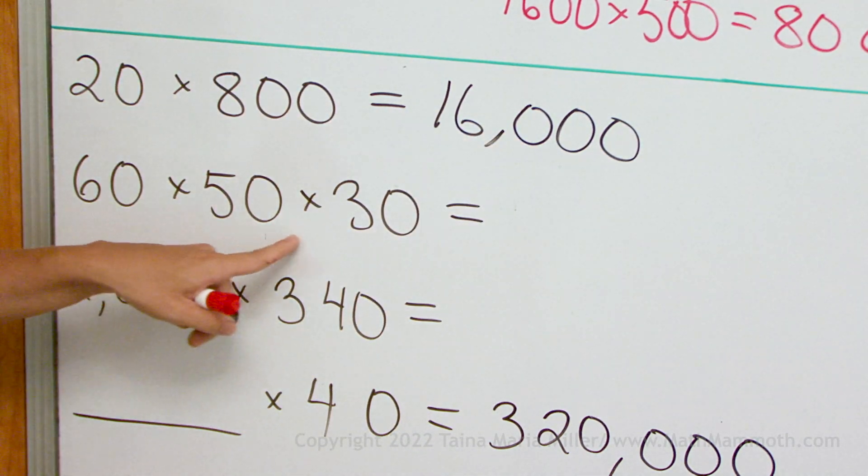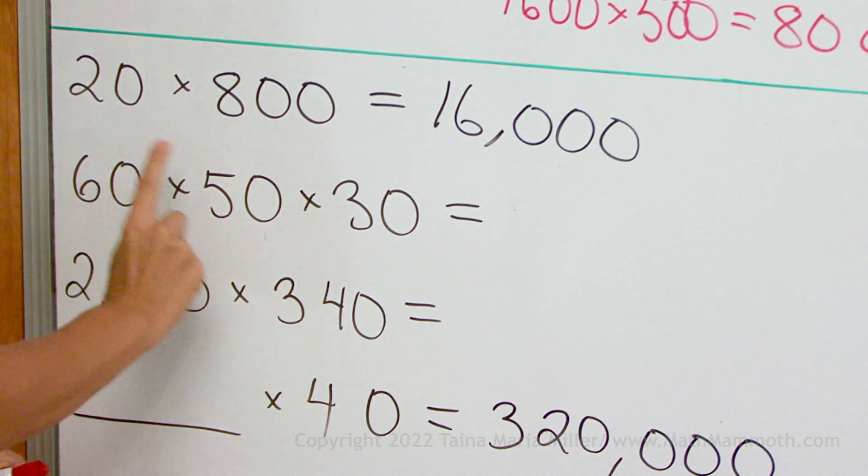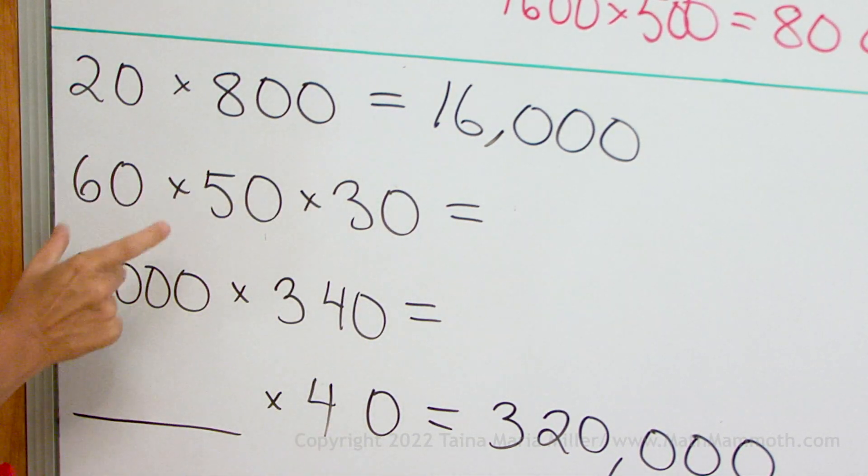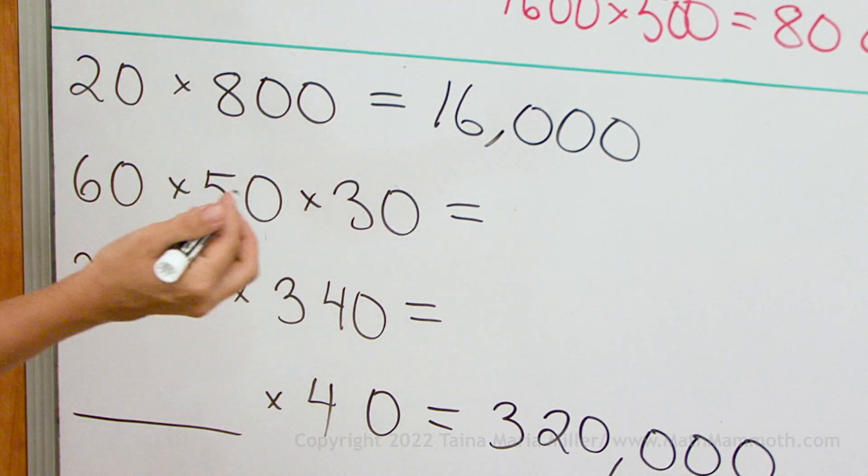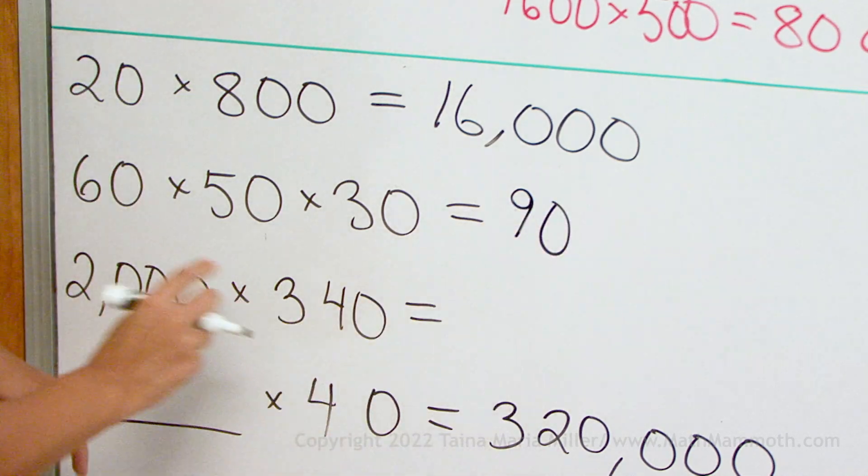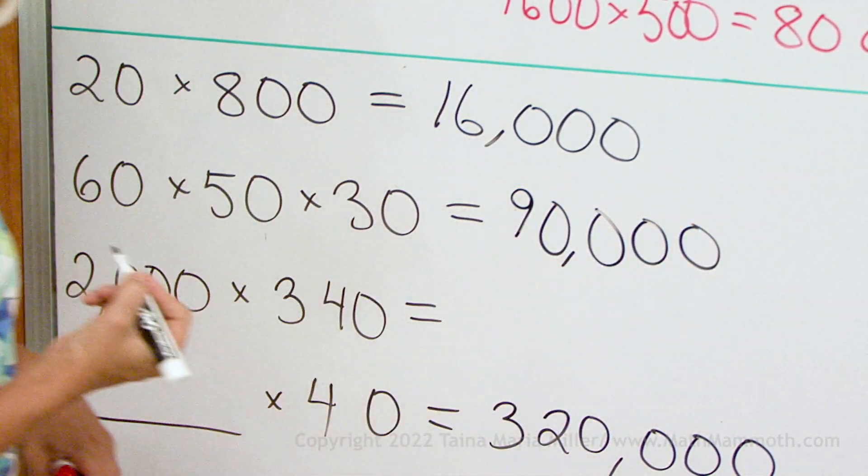How about 60 times 50 times 30? The same principle applies, just go 6 times 5 times 3. Okay, 6 times 5 is 30, and 30 times 3 is 90. And then we have a 0 and a 0 and a 0. So 90,000.